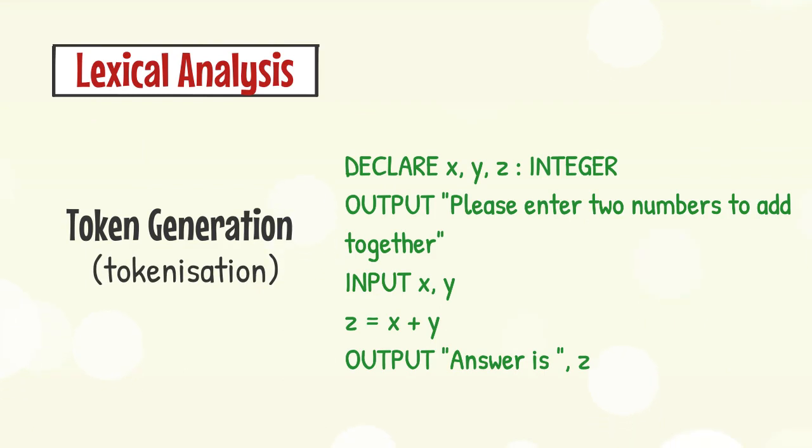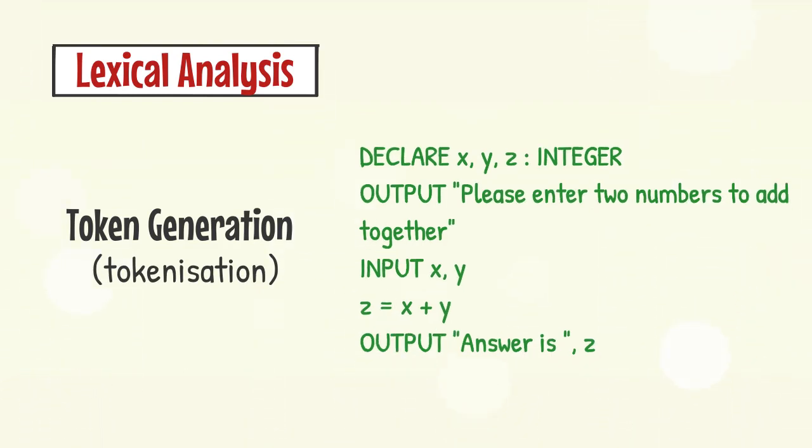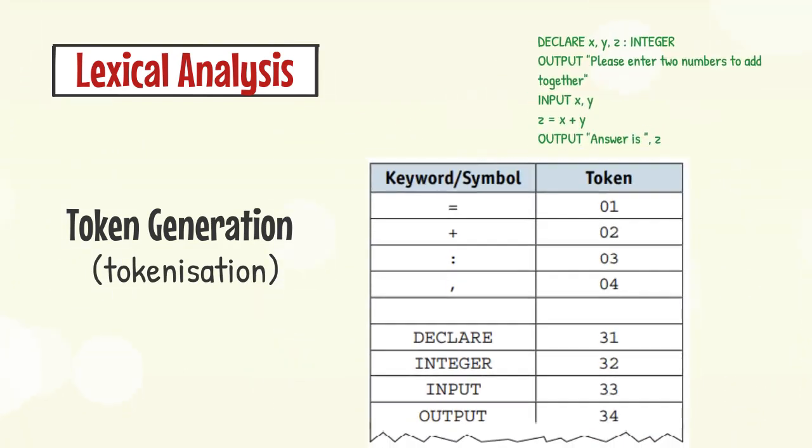In order to tokenize the program, the compiler will use a keyword table that contains all the tokens for the reserved words and symbols used in a programming language. In the example below, all the tokens are represented as two-digit hexadecimal numbers.